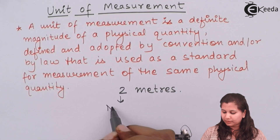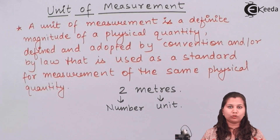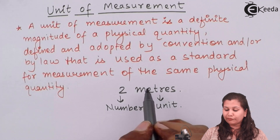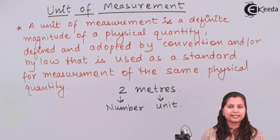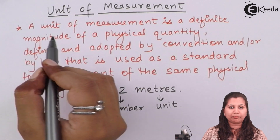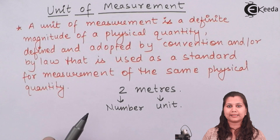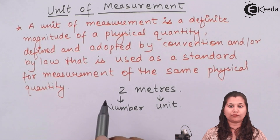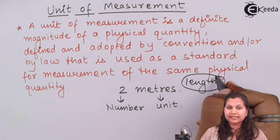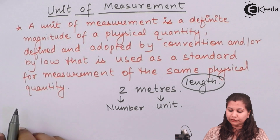Here, two is the number and meters is the unit. So whenever we are measuring a physical quantity or a physical parameter like distance or length, we express it in the form of meters, and this meter is the basic quantity in which we measure the length. The unit of measurement is the definite magnitude of a physical quantity; it is the standard quantity defined by some law or convention, and it is used for the physical quantity — like meters will be used for the length. That is called the unit of measurement.